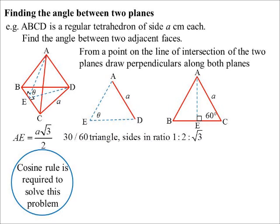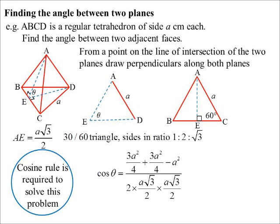So the cosine of theta would be 3A squared on 4, plus 3A squared on 4, minus A squared, over two times. Tidying all that up, I get cosine theta is a third. Cosine theta is a third. So I get 70 degrees 32.